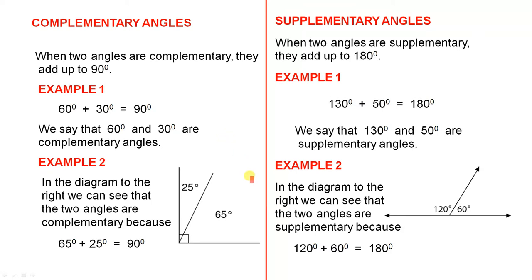Example 2. In the diagram to the right, we can see that the two angles are complementary because 65 degrees plus 25 degrees equals 90 degrees.